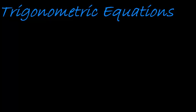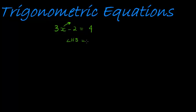Hi there and welcome to this lesson on trigonometric equations. We already have a basic idea of what equations are. An example would be something like 3x minus 2 is equal to 4. The idea of an equation is simply to find a value for the unknown so that the left-hand side is equal to the right-hand side.